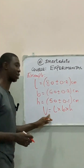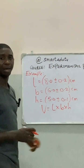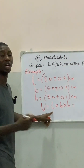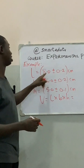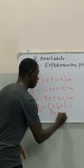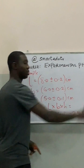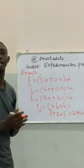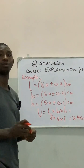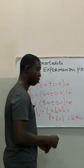From the formula, the volume of the rectangular box is given as length times breadth times height. Using the actual values, which are 8, 6, and 5: 8 times 6 times 5 gives us 240 centimeters cubed. So this is the actual volume of that rectangular box.